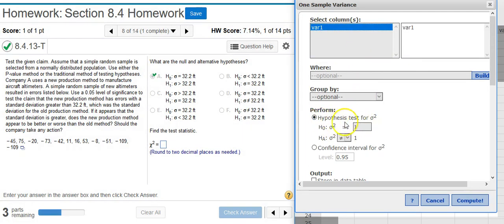In the hypothesis test area, I'm going to make sure these fields match the hypotheses that I selected from the previous part of the problem. But remember that because we're testing on variance, this is sigma squared, and our hypotheses have just sigma. So we need to take this value of 32.2 and square it to put here into the null hypothesis field.